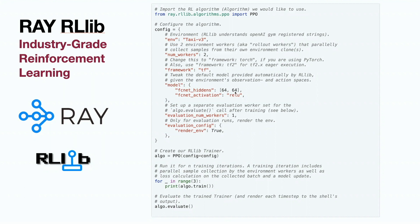How many hidden layers there will be is determined by the number of entries in the model config. The values of each entry — like 64 or 128 — decide how many neurons there are in every layer. We also have activation here; you can pass a single activation value and all neurons will have the same activation, or you can pass an array or list of activations, one activation per layer. Then you set how many evaluation workers there will be — these are training workers and these are evaluation workers — and we split data into train and evaluate.